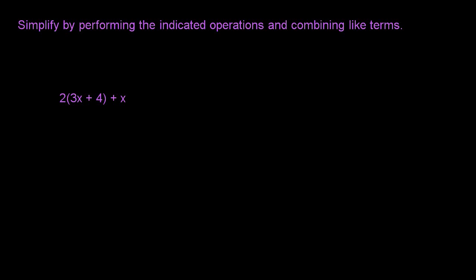Let's begin this problem. Let's read it first. It says simplify by performing the indicated operations and combining like terms. The problem reads 2 times the quantity 3x plus 4 plus x. They want us to simplify this problem. Let's see how you do on your own. I'll give you a hint: the first step is you want to get rid of the parentheses. Go ahead and put it on pause and see how you do.